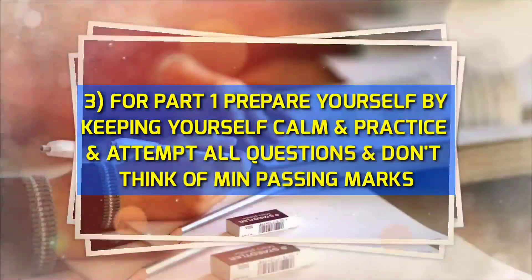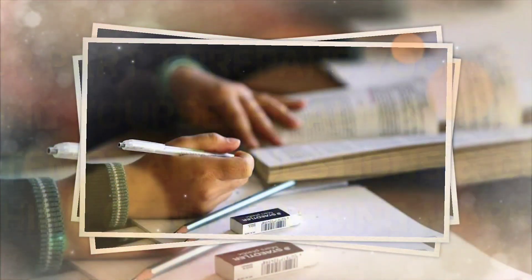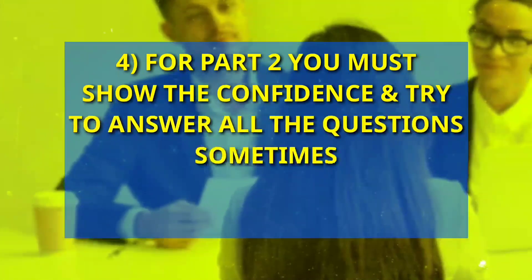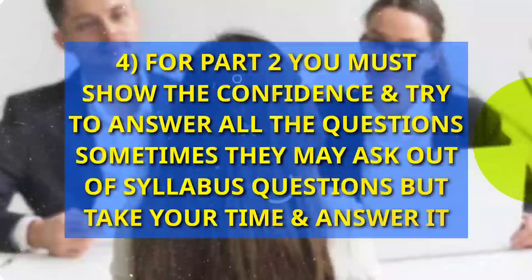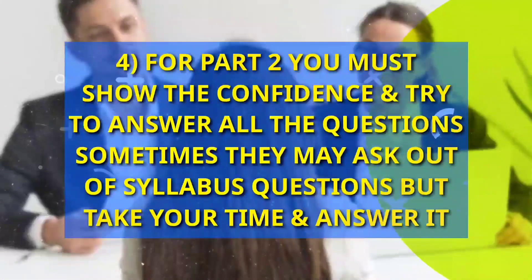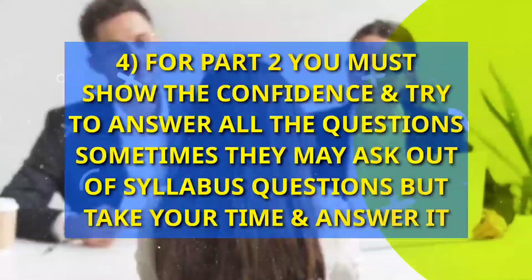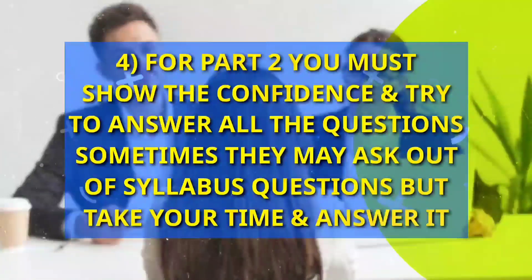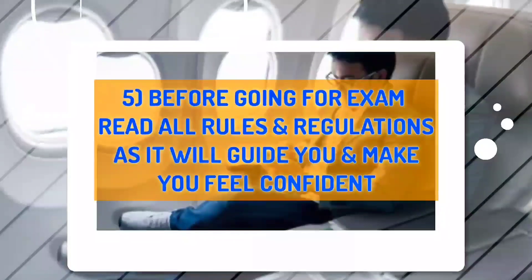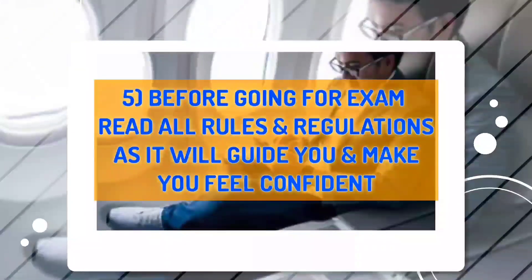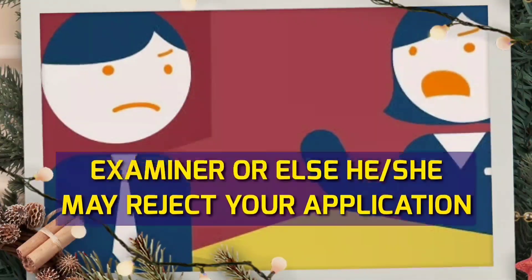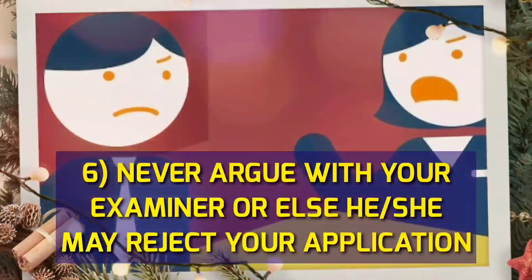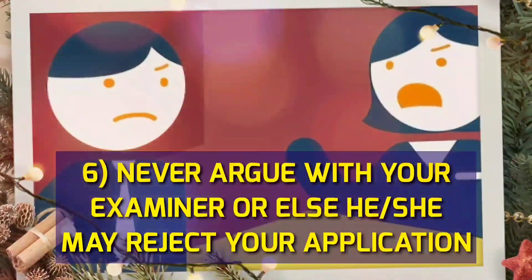Also, try to attempt all questions and don't aim for just the minimum passing marks. Tip 4: When going for Part 2 after clearing Part 1, be confident and try to answer all questions asked by the WPC and DGCA officers. Sometimes they will ask out-of-syllabus questions — don't worry, take your time and answer whatever you know, but don't stay silent. Before the exam and oral, read all rules and regulations carefully. Most importantly, never argue with the examiner, or they may reject your application.